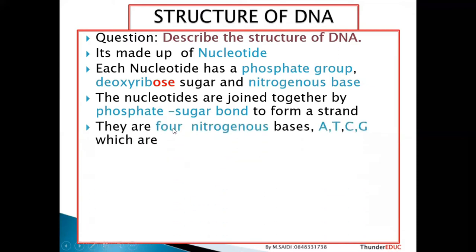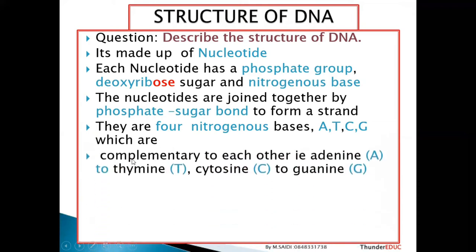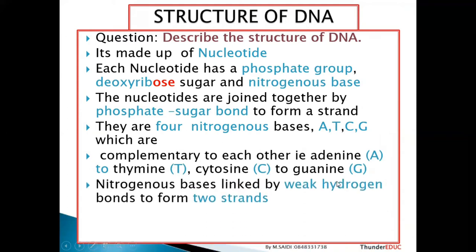There are four different nitrogenous bases. For DNA: adenine, thymine, cytosine, and guanine. If it is RNA, then you have adenine, uracil, cytosine, and guanine. These bases are complementary to each other. In DNA, adenine pairs with thymine, and cytosine pairs with guanine — it doesn't matter which way you state it, as long as you correctly pair adenine with thymine and cytosine with guanine.